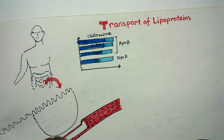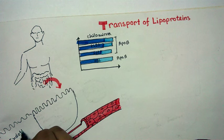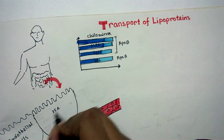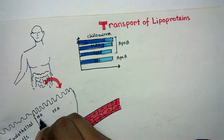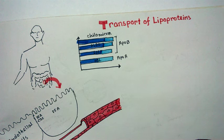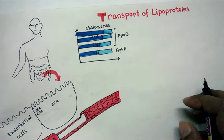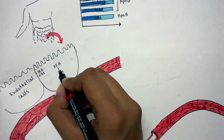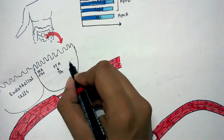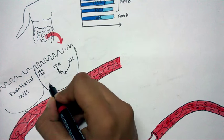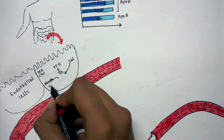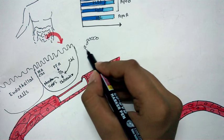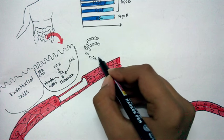Let's see how free fatty acids form chylomicron inside these luminal endothelial cells. Free fatty acids less than 12 carbons can be directly secreted into the bloodstream. Larger free fatty acids, together with triglycerides (TG), cholesterol (CHL), and some phospholipids, form something called chylomicron — a blob of lipid with some protein.